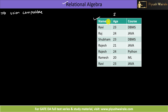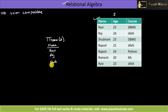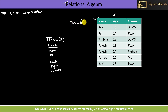I am projecting just the name from this particular table S. So my relational algebra query will be: pi name from S. The output will be: Ravi, Raj, Shubham, Rajesh — Rajesh will not be repeated because the pi operator gives distinct values — Ramesh, and Ravi is already present so it won't be repeated either.